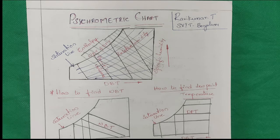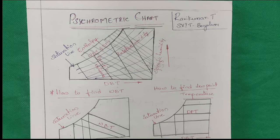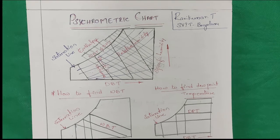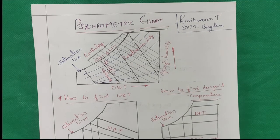But if it is related to air conditioning — suppose you want to install a very big air conditioning system — it is difficult to calculate everything with the help of formulas. During that condition, you have to go with the chart. If you go with the chart, in a very simple way, you can find out the solution with the help of the psychrometric chart.